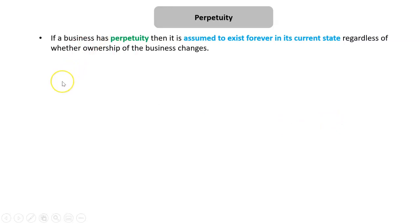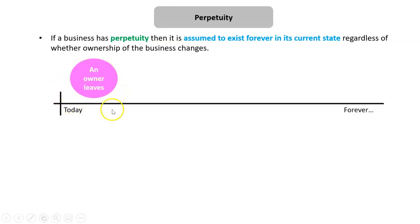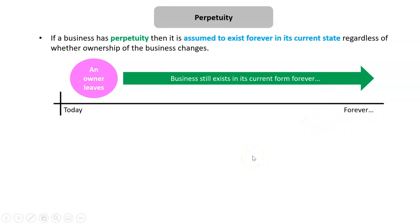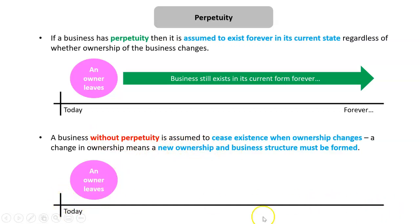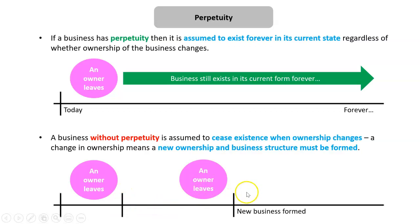Perpetuity means a business exists in a legal form and can continue forever, no matter if ownership changes. For example, BHP shares are bought and sold on the share market constantly, but BHP doesn't need to re-register itself — it continues as the same business. Without perpetuity, if an owner leaves you must register a new business, which is very inconvenient.